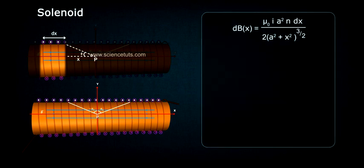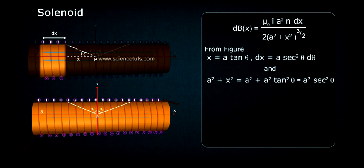dB(x) equals μ₀ i a² n dx divided by 2(a² + x²)^(3/2). From figure, x equals a tan θ, dx equals a sec² θ dθ, and a² + x² equals a² + a² tan² θ equals a² sec² θ.